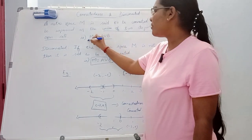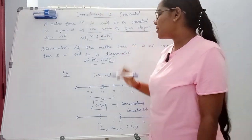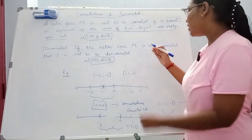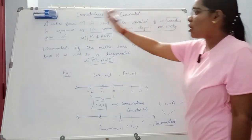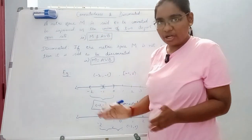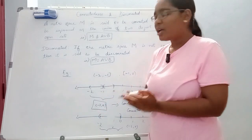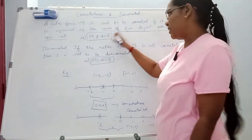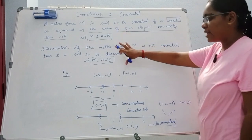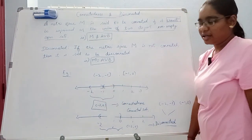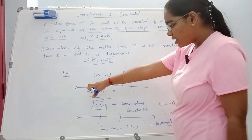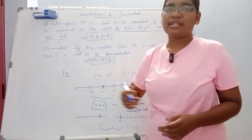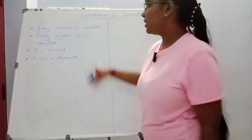So, M not equal to A union B in the case of connectedness, whereas in the case of disconnectedness, M equals A union B, where A and B are disjoint non-empty open sets. This is the definition of connectedness. Let's see the examples of connectedness and disconnectedness.